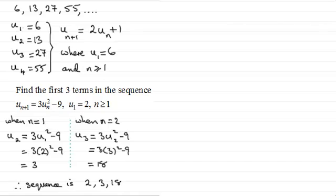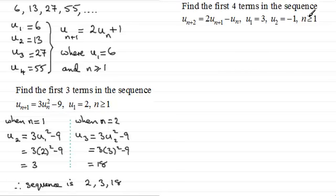Now sometimes you get questions which involve several terms in the sequence. And here I've got an example which should illustrate this. What we've got is, find the first four terms in the sequence then, where the n+2th term, Un+2, is equal to twice the n+1th term, 2Un+1, minus the nth term, Un. And we've got the first two terms in this sequence, U1 being 3, U2 being minus 1. And it's defined for n greater than or equal to 1.